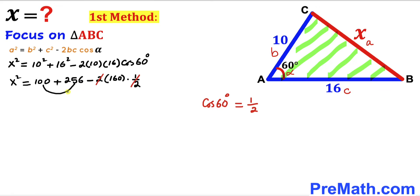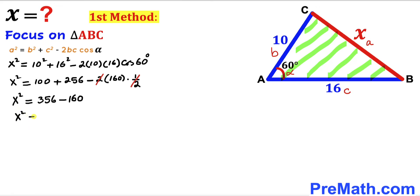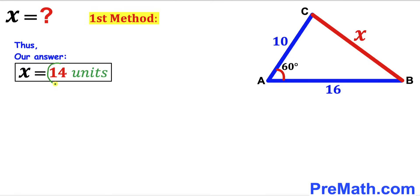Therefore x² = 356 − 160 = 196. Taking the square root on both sides, our x value is 14 units. So x = 14 units using the law of cosines.